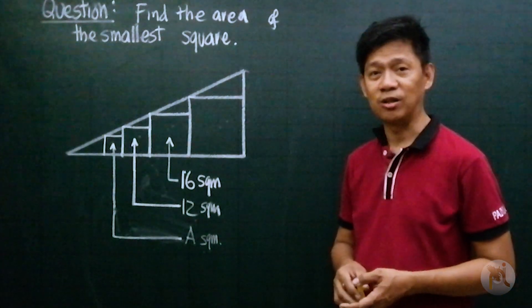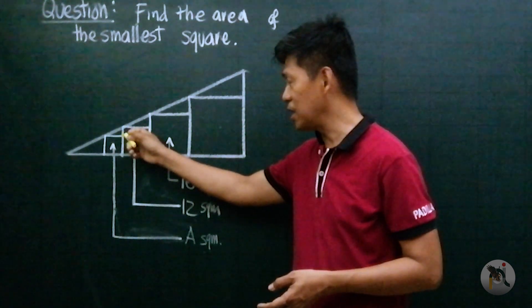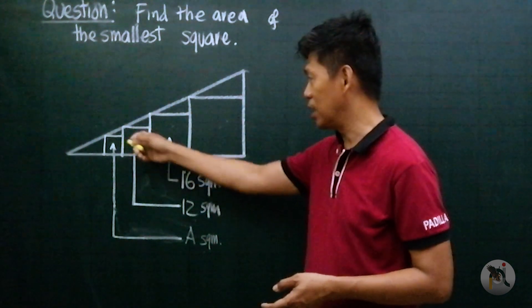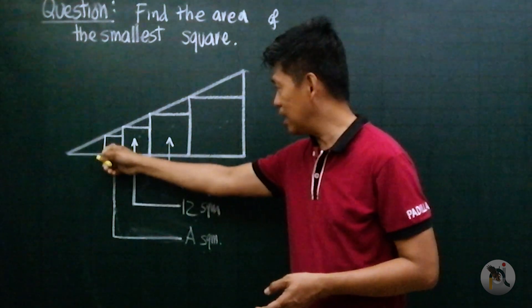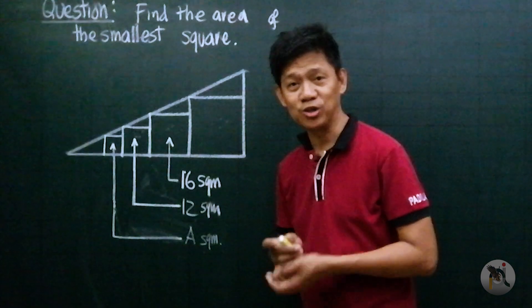Since this square was obtained in the same manner as this square is obtained from this square, the areas of these squares are in geometric progression, meaning they have a common ratio. Meaning A over 12...